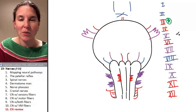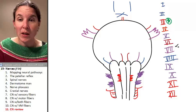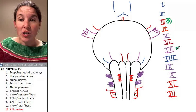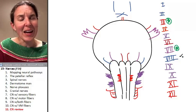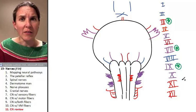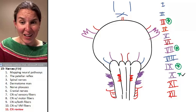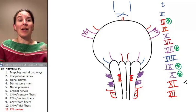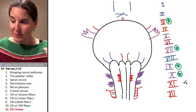Oculomotor makes your pupils constrict. Facial makes you salivate and cry. Glossopharyngeal makes you salivate. And vagus does everything else. Everything. Wow.